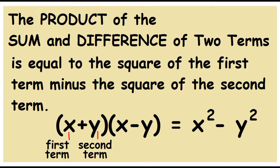The product of the sum and difference of two terms is equal to the square of the first term minus the square of the second term.